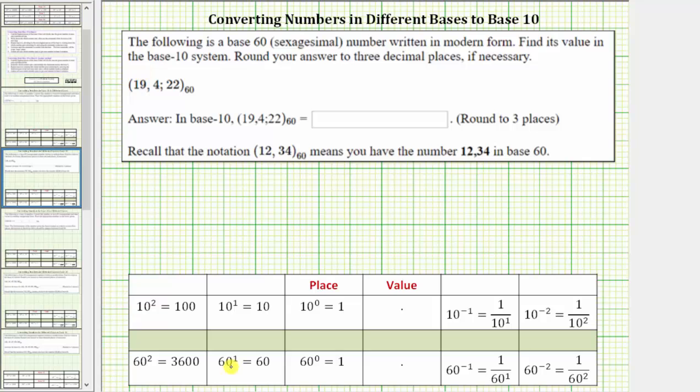the 19 is in the 60 to the first or 60's place value, the 4 is in the 60 raised to the power of zero or one's place value, and the 22, which is to the right of the decimal point, is in the 60 raised to the power of negative one or one-sixtieth place value.